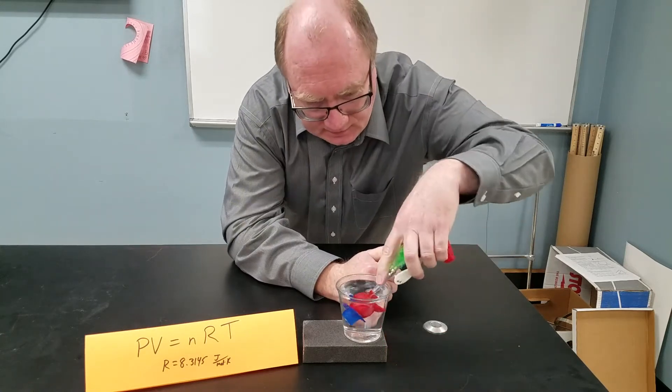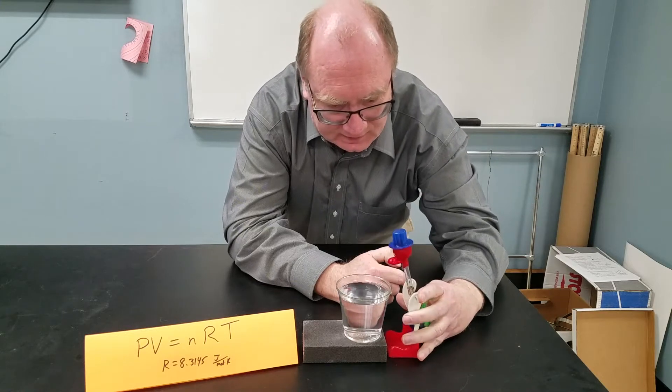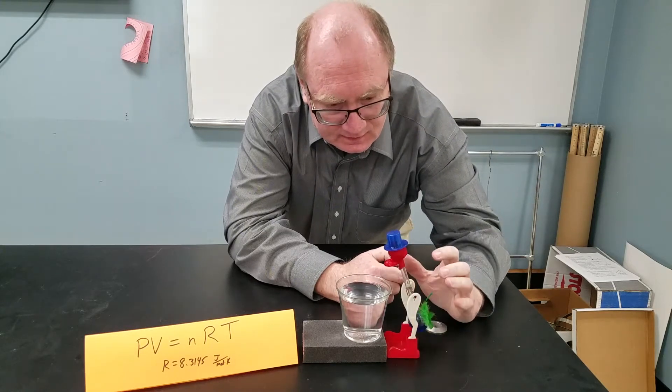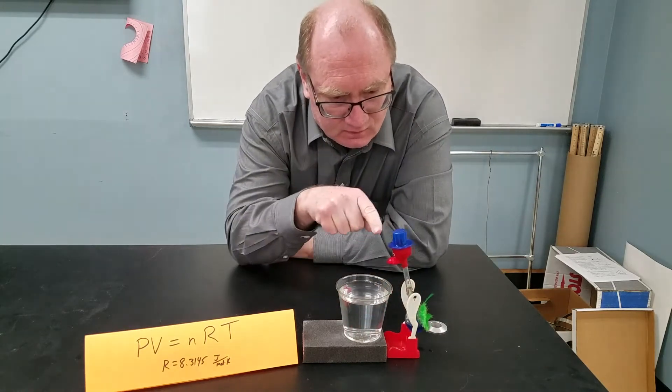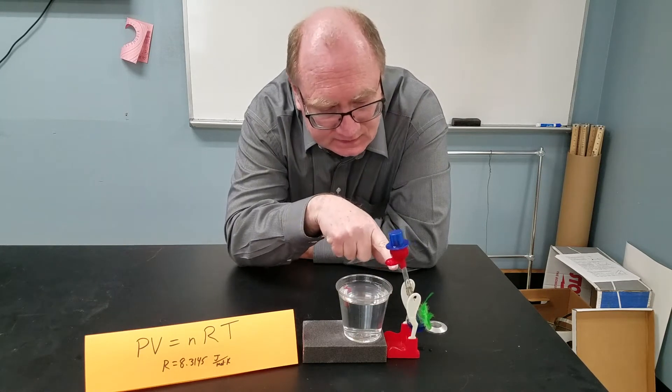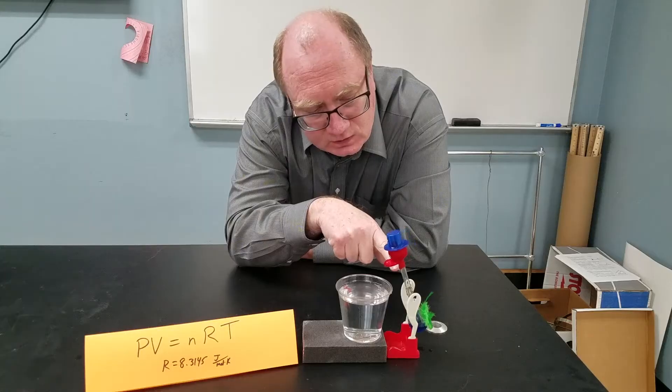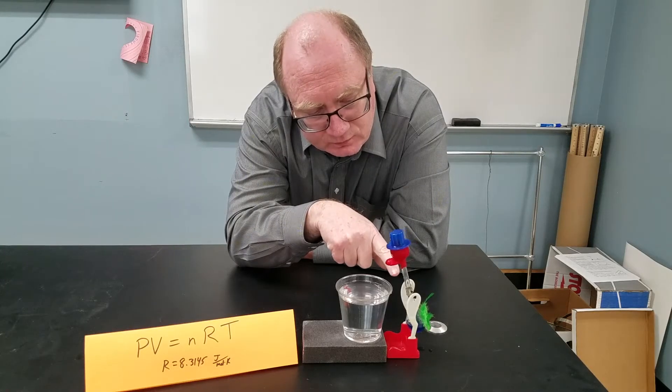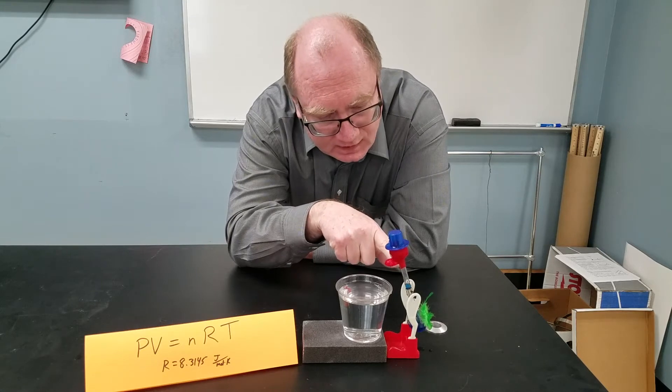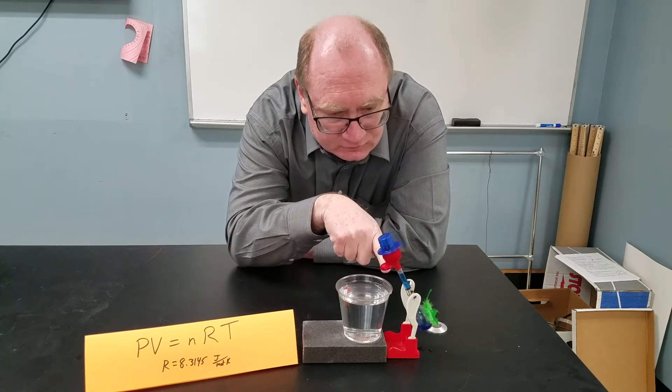So we're going to take the bird and we're going to dunk it in the water and get it really wet on top, and then it's going to start rocking back and forth. I'll bring a close-up here in a second to show you that the fluid is moving up through the tube, and when it gets high enough then it will tilt forward.